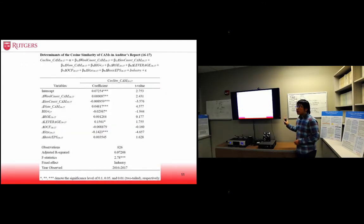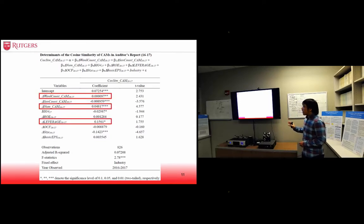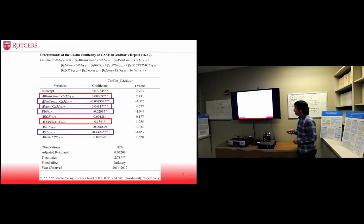About the regression analysis results, the change of word count, the count and the number of CAM disclosures in auditors report, and change of leverage level have positive correlation with cosine similarity value. The sentence count of CAM disclosure, the size change, and whether Big Four or not have negative significant correlation with cosine similarity of CAMs.